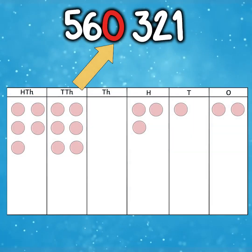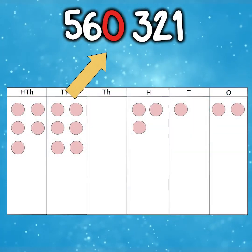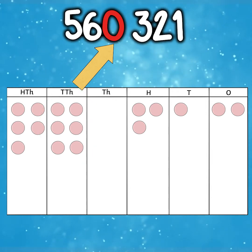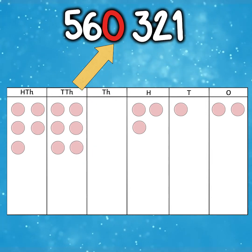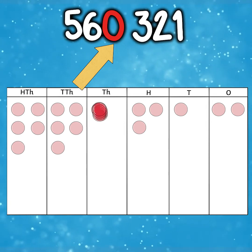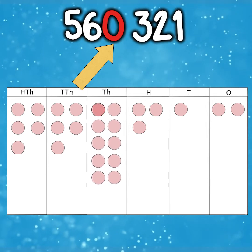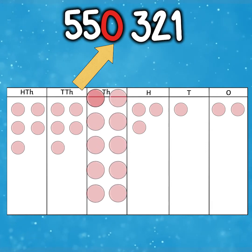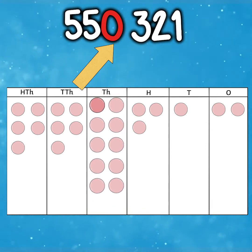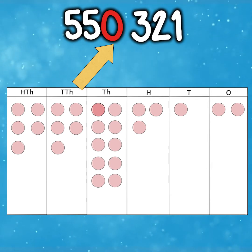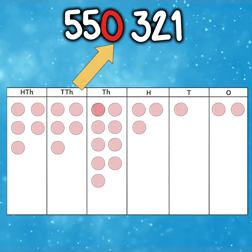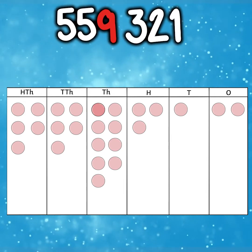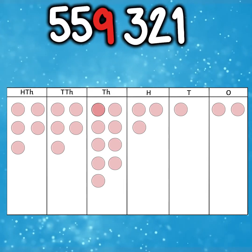But what if we continue to decrease the number by 1000? We currently have 0 in the thousands column, so we must borrow from the 10,000s column. I will take away one 10,000 and put it in the thousands column. The value in the 10,000s column was 6 and has now become 5, and we have 10 in the thousands column, as 10,000 is 10 one-thousands. This allows us to decrease the thousands column by 1, which is 9. So our new number is 559,321.